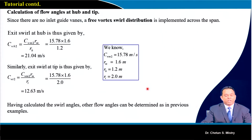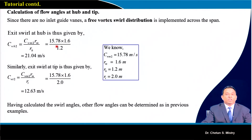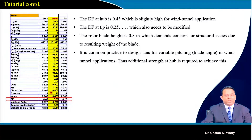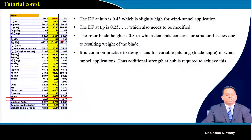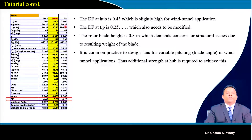Applying the free vortex concept, C_w2 at the hub is 21.04 m/s and C_w2 at the tip is 12.63 m/s. This helps in completing the design across hub, mid, and tip stations. Once calculations at hub, mid, and tip stations are done, it is important to further discuss modifications and finalize the design.